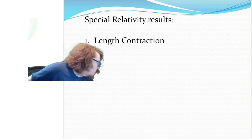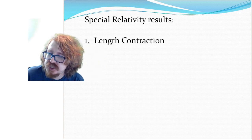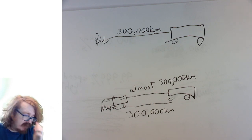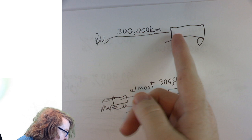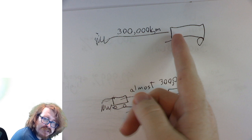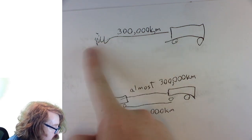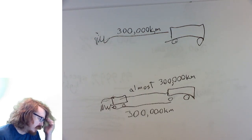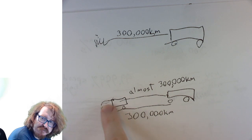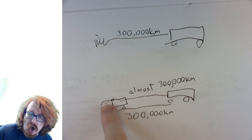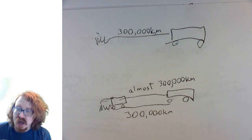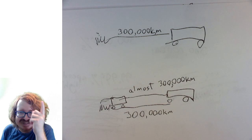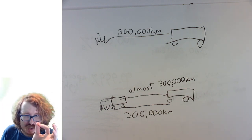Going back to my earlier example about the beam of light coming out of the train: this beam of light came out of the train, and we were in disagreement. From my point of view on the fast-moving train, I said the light went a long distance in front of the train. But from your point of view, because the train was moving, you said it was a short distance in front of the train. The reason I saw it long and you saw it short is because of this relativity - because all of this was moving a different speed than you, you saw that distance shrink down to a tiny distance.